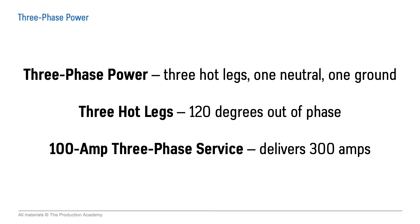In this video, we saw how 3-phase power has three hot legs, neutral and ground, how the hot legs are 120 degrees out of phase with each other, and how a 100-amp 3-phase service delivers 300 amps of current. In the next section, we talk about how we generate 3-phase power with electromagnetic induction.